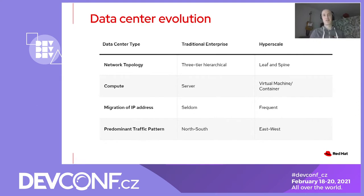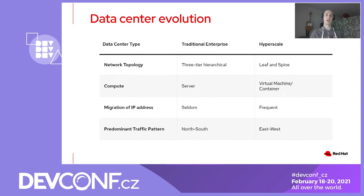I don't want to overgeneralise data centres — every data centre is designed slightly differently. However, we do want to talk about how data centres have evolved over the last couple of years, and this table is meant to highlight that. In terms of network topology, traditional data centres had networking arranged in a hierarchical manner, like an upside-down tree. That has changed over the last number of years to a more leaf-and-spine type model, and the reason for that is scalability — ensuring the ability to scale the physical topology of the data centre as required.